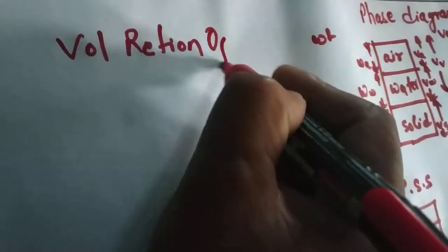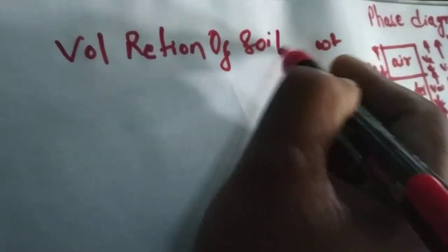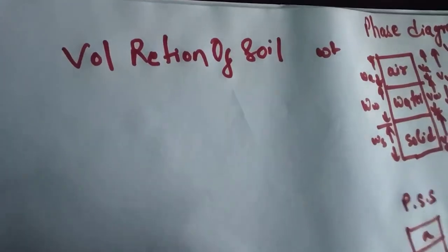Now let's understand the volume relations of soil. Before that, I want to give you the difference between void and solid. This is a container with lots of solid particles inside, and the gaps between the solids are known as voids.